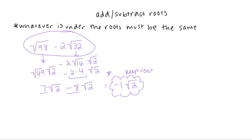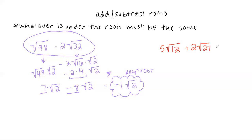The last practice problem is 5 root 12 plus 2 root 27 minus the square root of 128. When you're done, go to the Google Classroom post and fill out the Google form. The code word for today is pineapple — answering the three questions will get you credit for watching today's video.